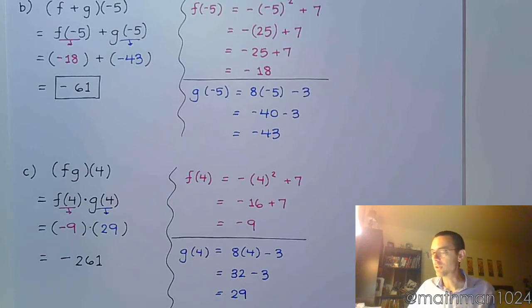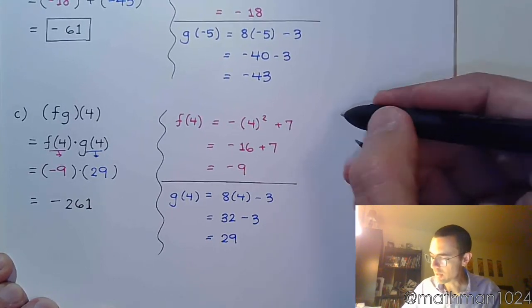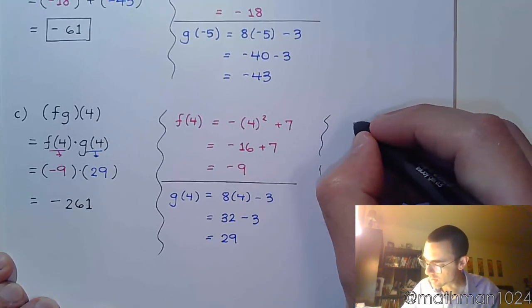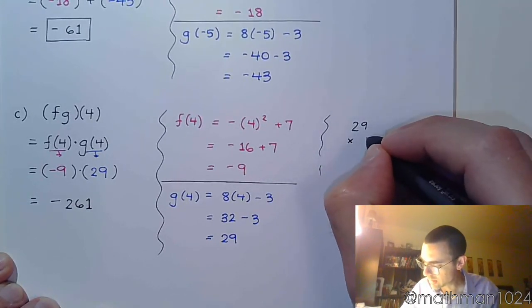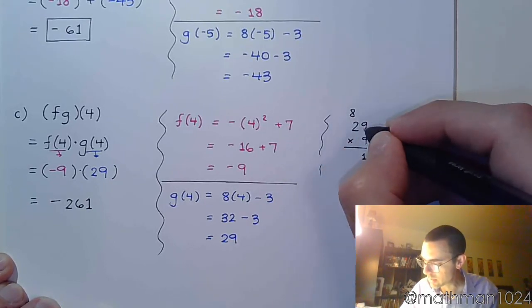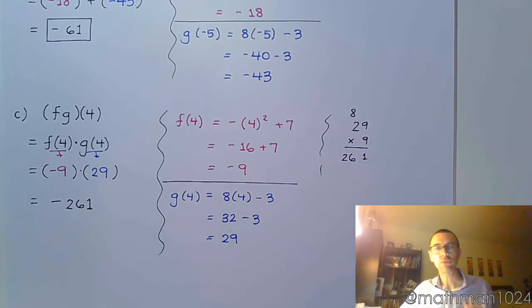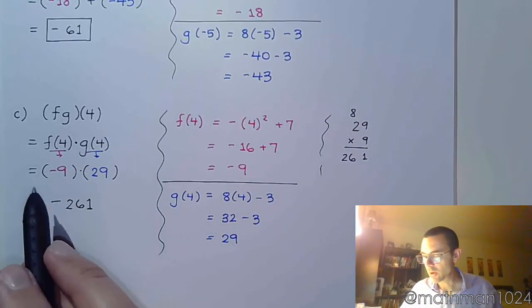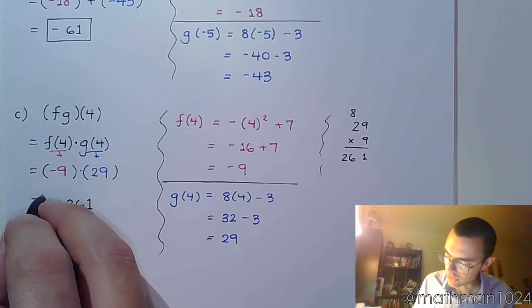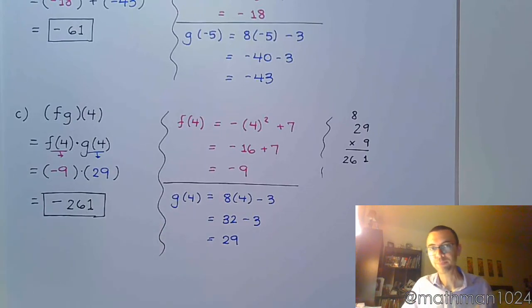But, you know what? Sometimes I go a little bit too fast, and I don't pay attention. So, let's see if I did the math correctly. Again, off to the side, we're going to scratch this out. So, 29 times 9. That's going to give me 81. That's 18 plus 8 is 26. So 261. And I already knew what my sign was going to be, because I do pay attention to my signs. So, there you have it. Hopefully, all this makes sense.